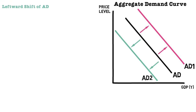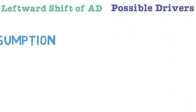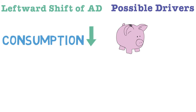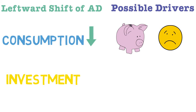Now looking at leftward shifts of the aggregate demand curve, there are also five key drivers. Taking consumption first: for a leftward shift, consumption would have decreased. This might be because consumers are saving for the future, sentiment has dropped, or people aren't as confident about the future and have increased their savings rates, spending less. If people are starting to lose their jobs or a recession is on the horizon, consumption may drop, shifting AD to the left.